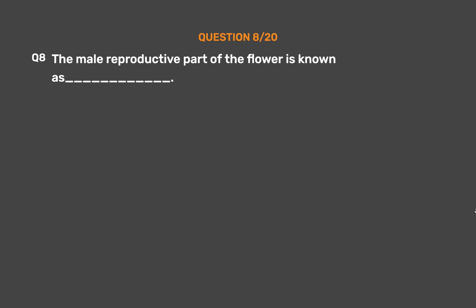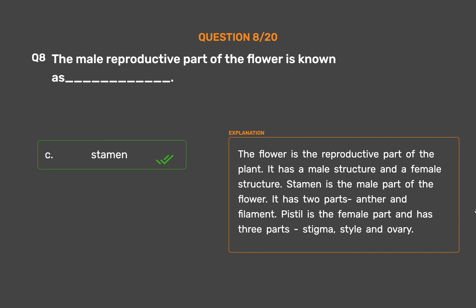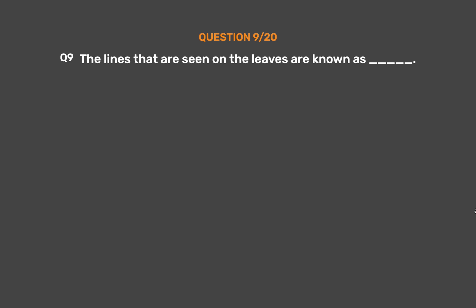Question 8: The male reproductive part of the flower is known as ___. Option A: Petals, Option B: Sepals, Option C: Stamen, Option D: Pistil. The correct answer is Option C, Stamen. The flower is the reproductive part of the plant. It has a male structure and a female structure. Stamen is the male part of the flower; it has two parts: anther and filament. Pistil is the female part and has three parts: stigma, style, and ovary.